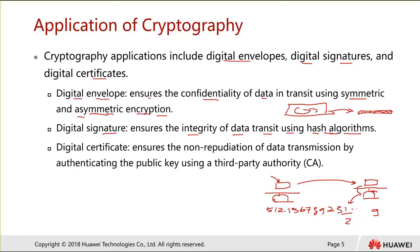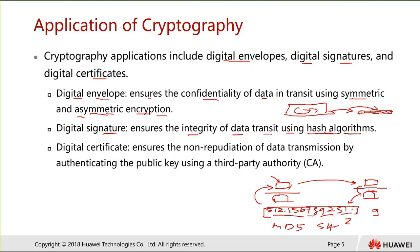Whatever information you put into the hash algorithm calculator, it produces a fixed value that can be transmitted over the network. Importantly, you cannot take the hash value and reproduce the original information — it is a one-way function. Popular hash algorithms include MD5 and SHA, which differ in the number of bits they use.